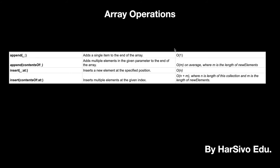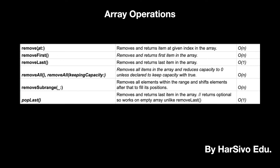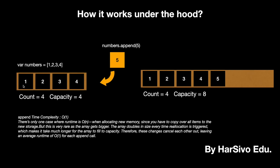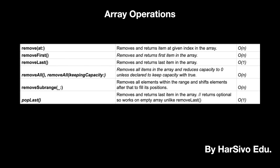Append of only one element will take O(1). Appending multiple elements — O(M) where M is the number of elements in that other array. Remove at a particular index, similar to insert, if you remove an element from an array you have to do shifting. So this is why remove is O(N). If you remove the first element, you have to shift 2, 3, 4 — that is why removeFirst is O(N). Whereas removeLast takes O(1) because if you remove the last element you don't have to shift anything. removeAll or removeAll with keepingCapacity takes O(N).